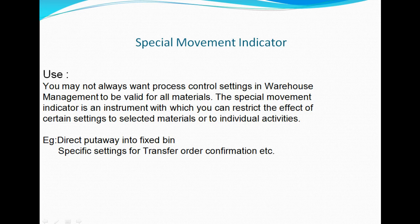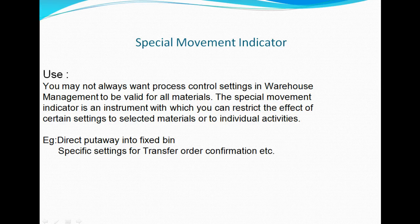For example, if you have a liquid material coming in and you don't want to put it in the goods receiving area, you can make a setting so that when you do a goods receipt it directly goes into its designated fixed bin. Or if you are doing internal warehouse processes like scrapping, and there is a certain type of material you would want to put in a different scrapping area, you can influence the way movement types affect further processes. You can also have a transfer order immediately confirmed for a certain type of material. Let us see in the system how we set up a Special Movement Indicator and influence the way material is processed in the warehouse.